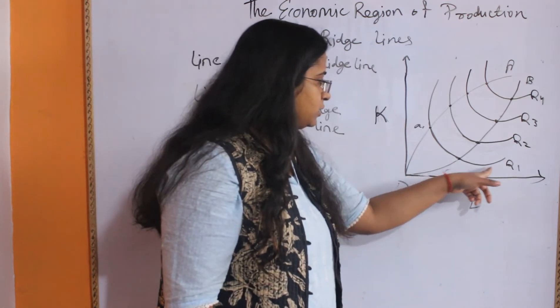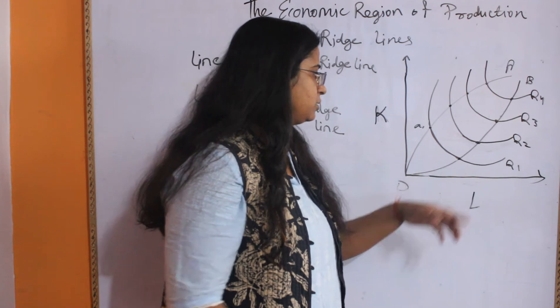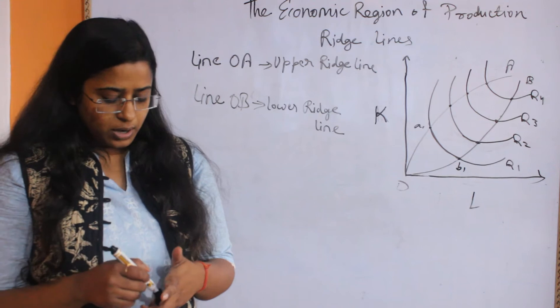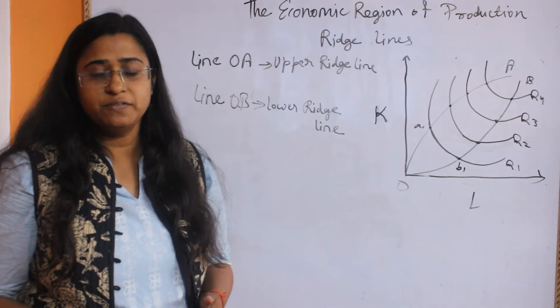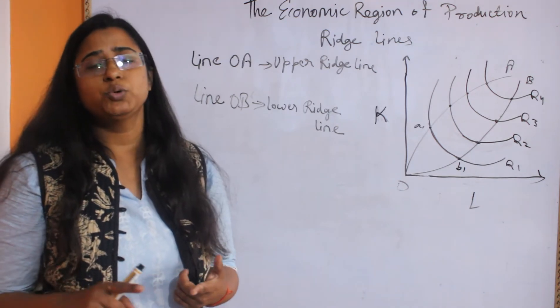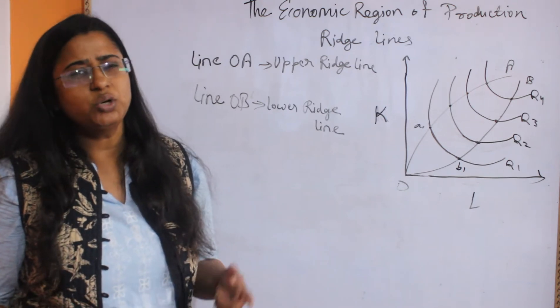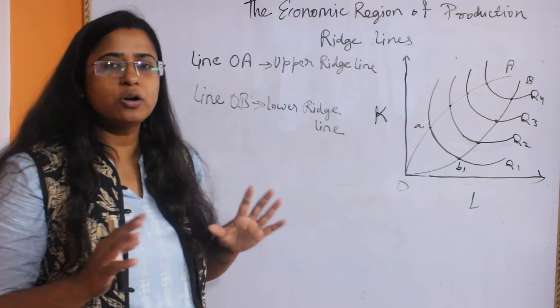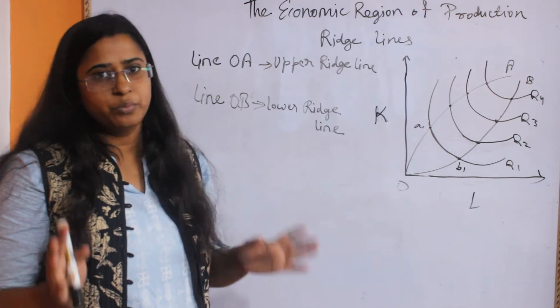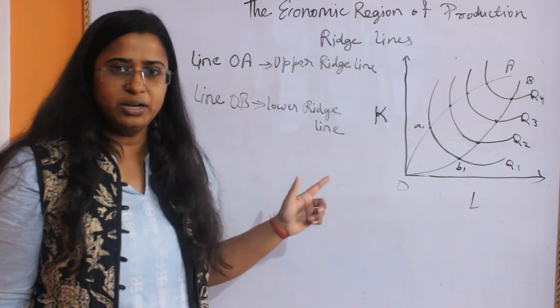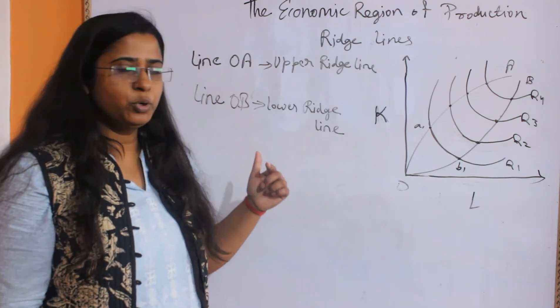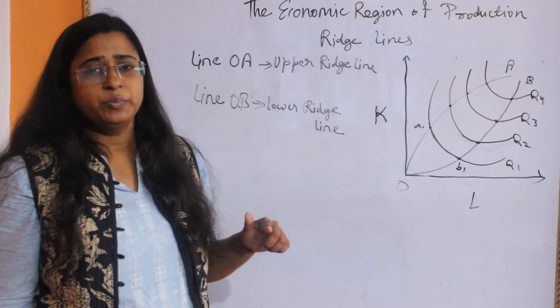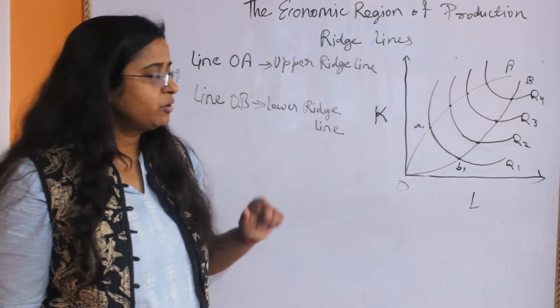Here too, below this range at point B1, the slope of the isoquant again gets positive. That means a producer has to increase both factors of production to attain the same amount of output, which is not feasible for a rational producer. That is why it is said in the beginning that the marginal productivity or the marginal product of a factor should be diminishing but positive.